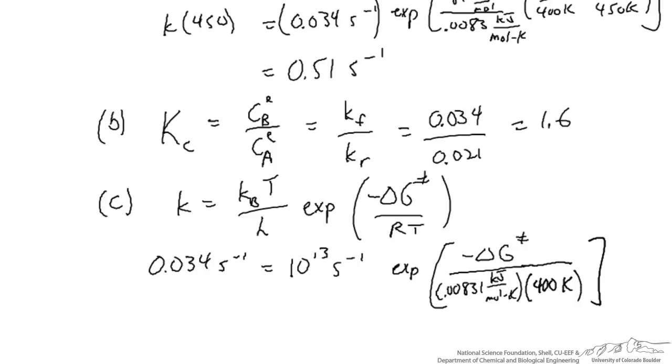Now we can divide both sides of the equation by 10 to the 13 reciprocal seconds to get a dimensionless quantity on the left-hand side. Take the natural log of both sides and solve for delta G to the transition state. When we do that, we get that delta G to the transition state is equal to about 110 kilojoules per mole, which solves the final part of this problem.